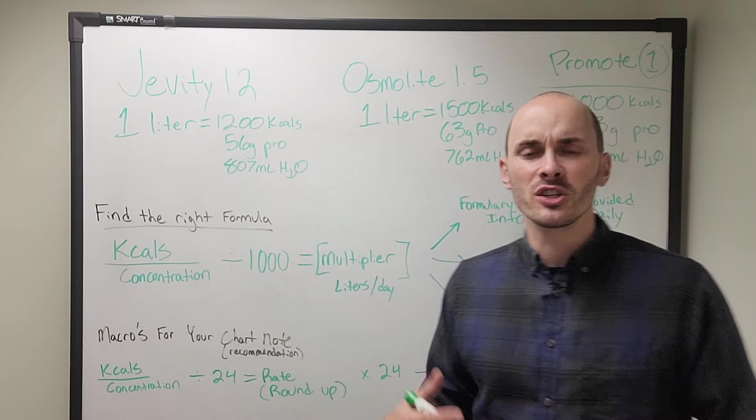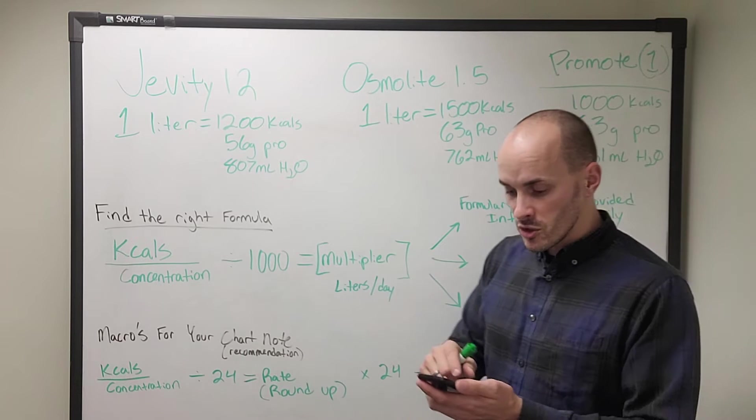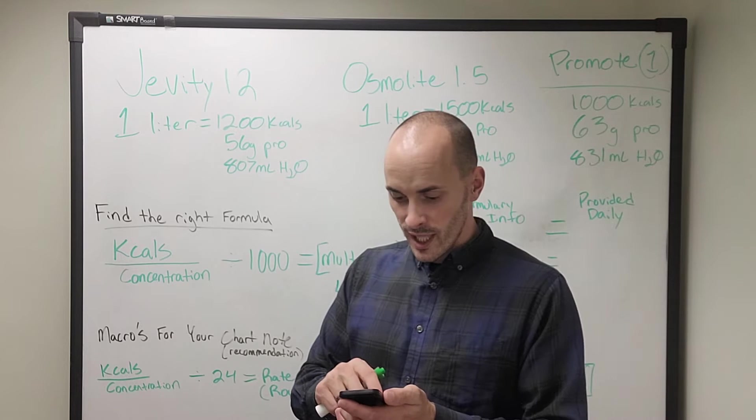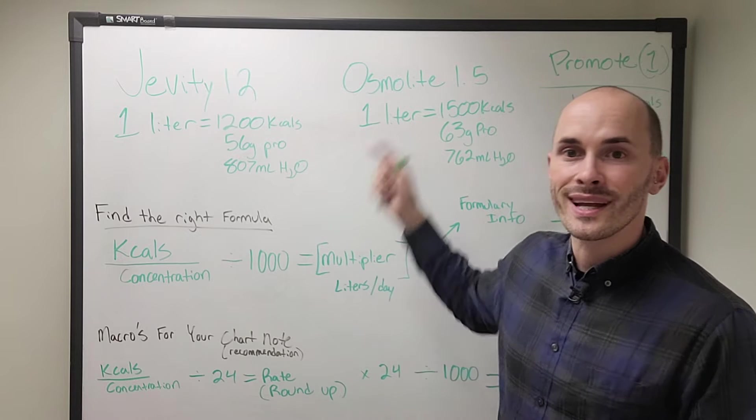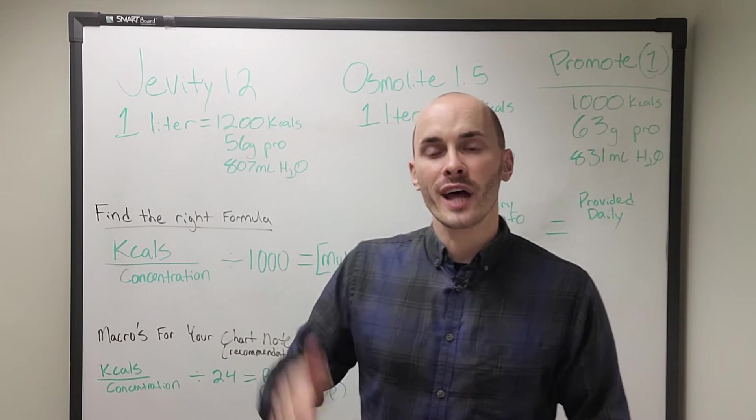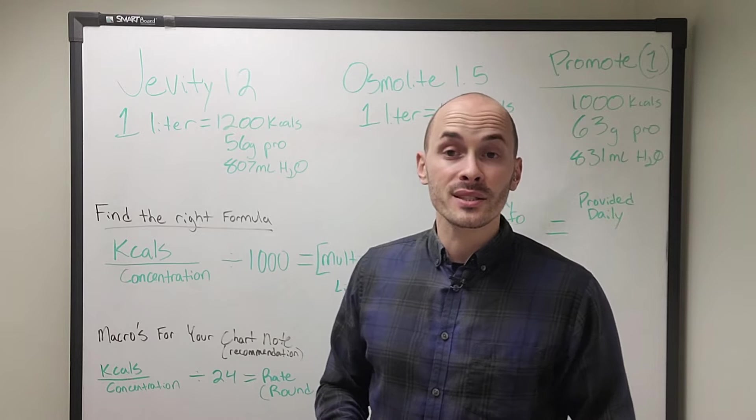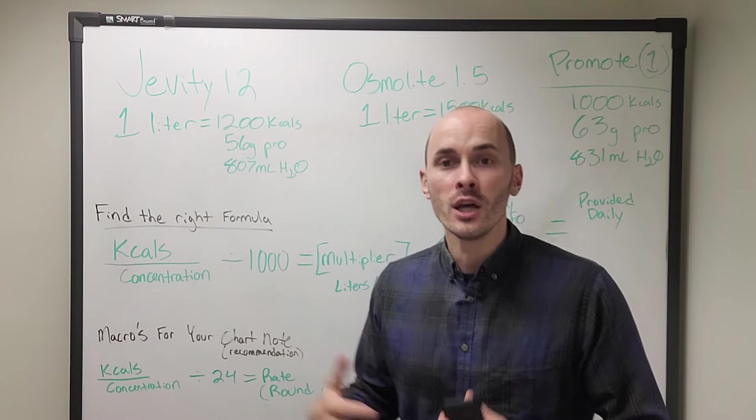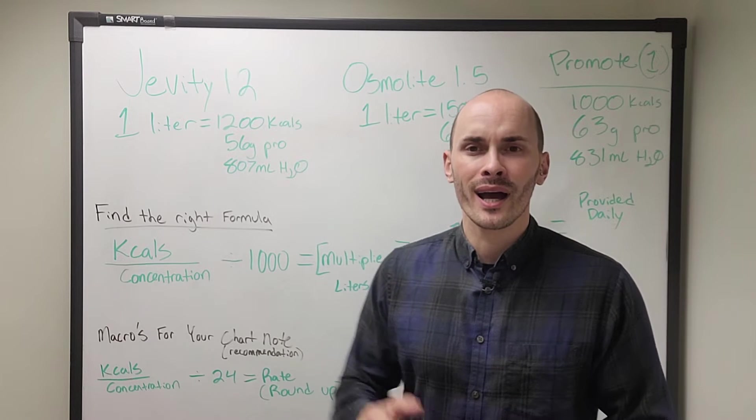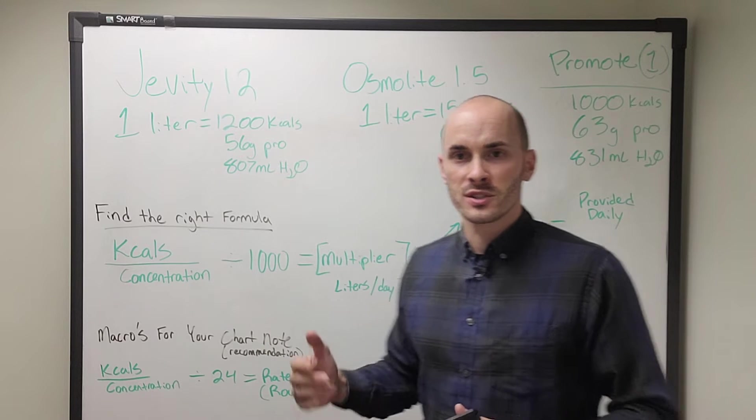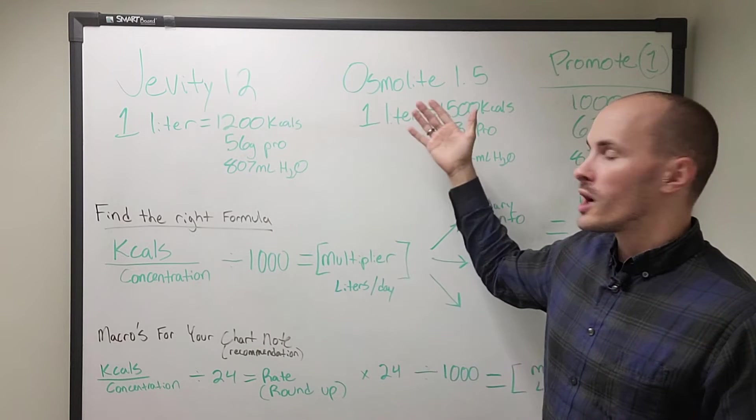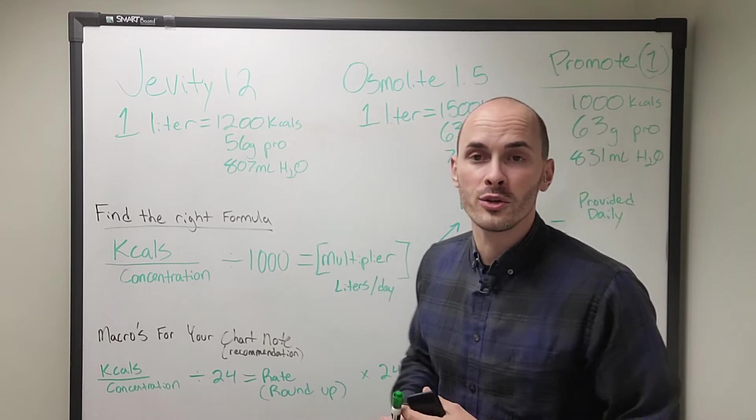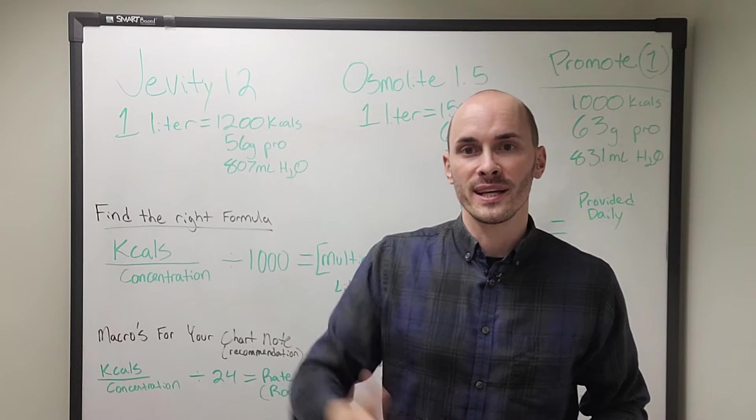But let's say they're having some tummy issues and you're not sure if they'll tolerate it. If you choose an Osmolite 1.5 for someone that needs 2,500 calories per day, you would only have to run that at 70 mils an hour. So that might be something that you want to consider as a dietitian is how much volume of formula are you giving a patient? Do you want them to get fiber or not? And ultimately it's those factors that are going to determine which formula you pick.